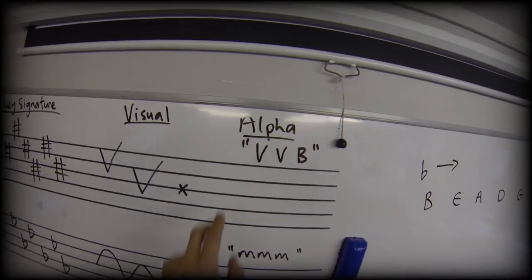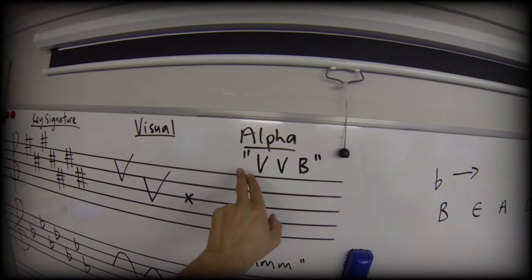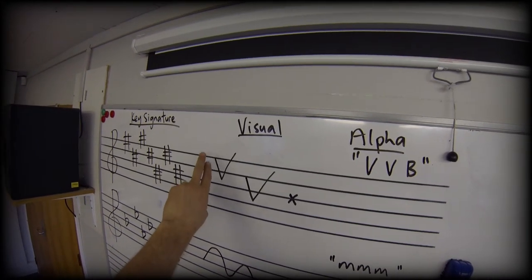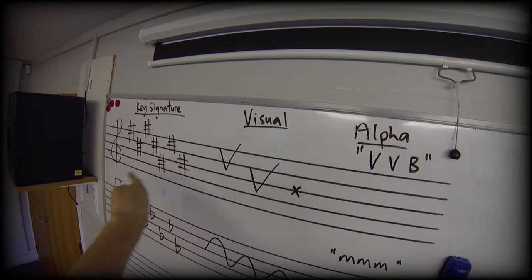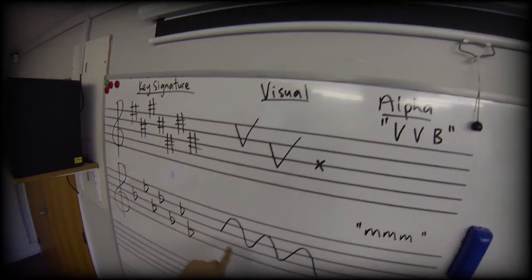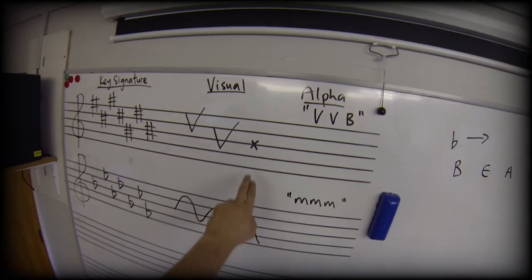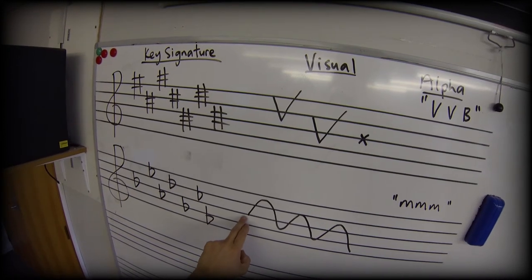So if we were to think of this in alpha terms, we could say V, V, B. So if we learn the visual alpha for our key signatures, the sharps are V, V, B, and the flats are M. The sharps end right in the middle, the flats begin right in the middle.